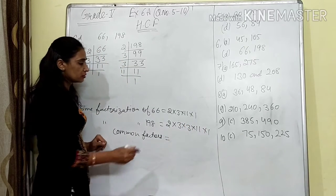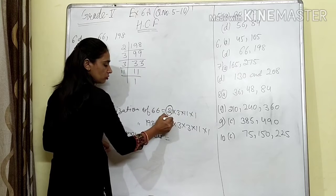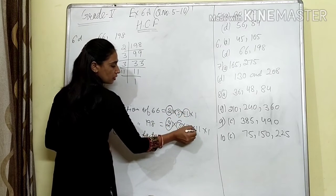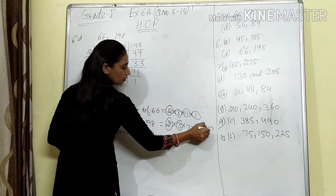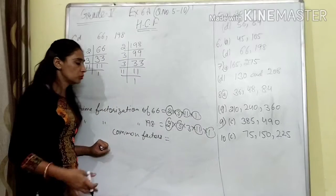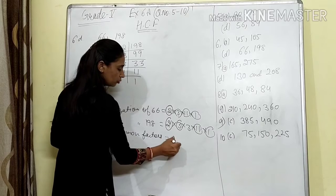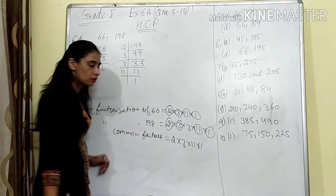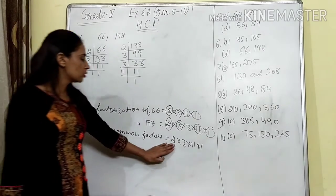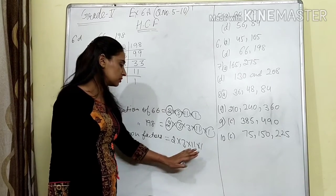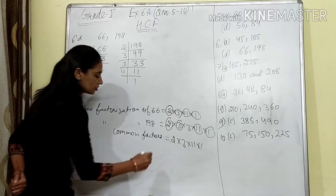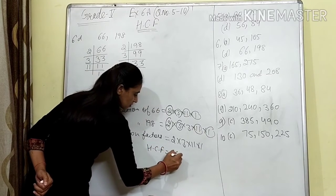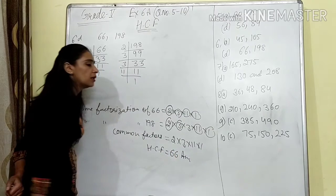What are the common factors? Two is here and here also. Three is here and here also. Eleven is here and here also. One is also common. So common factors are 2 × 3 × 11 × 1. Multiply: 2 × 3 = 6, 6 × 11 = 66. So HCF is 66.